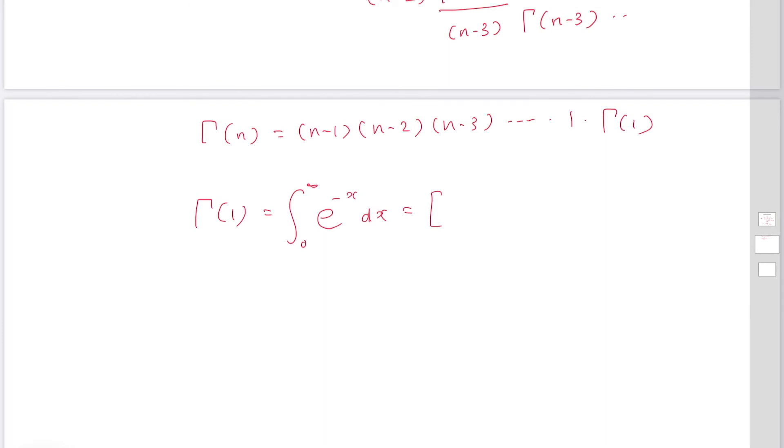So it becomes minus exponential minus x, from 0 to infinity. If you substitute x equals infinity, it's going to be 0. If x equals 0, it becomes 1. So this becomes 1.